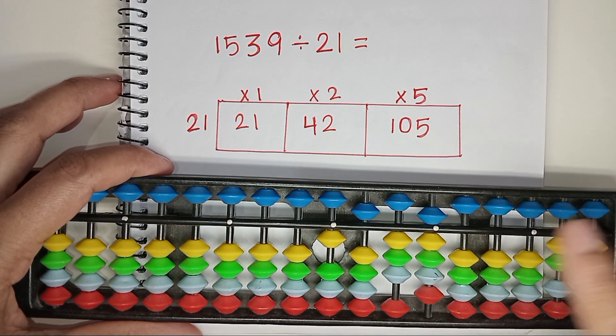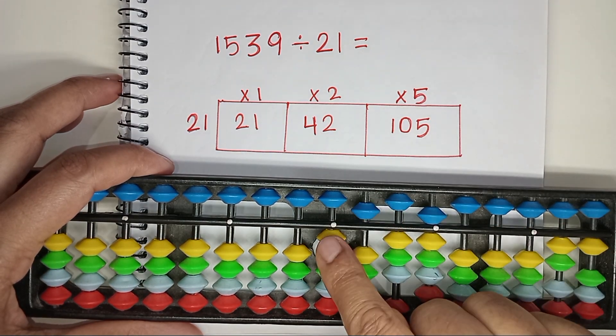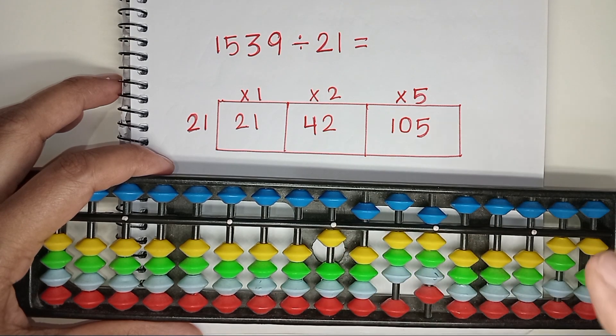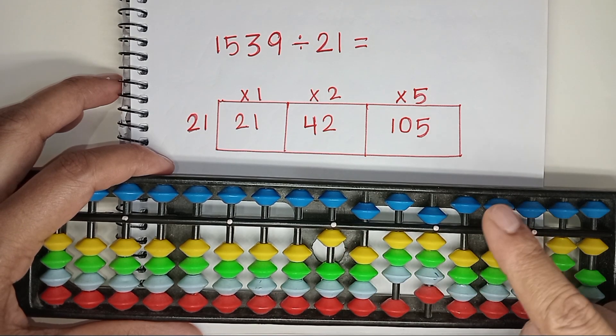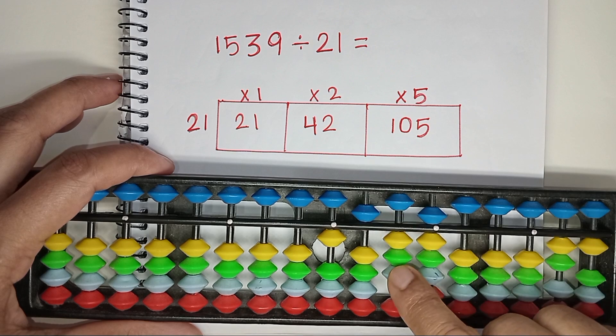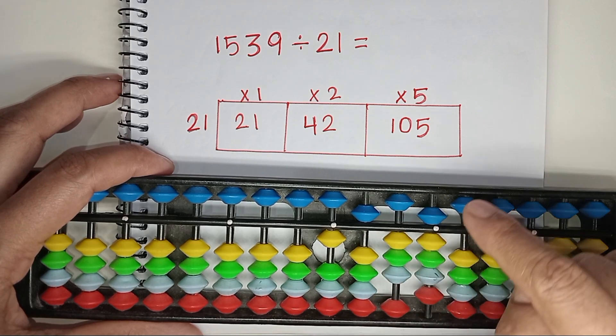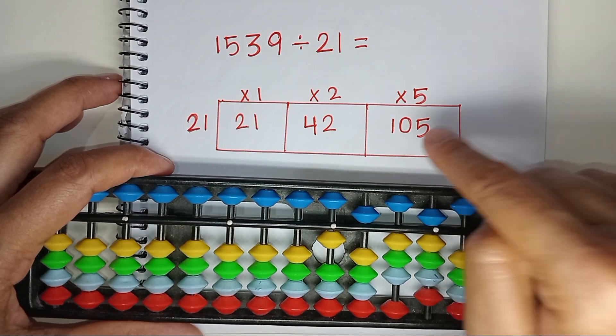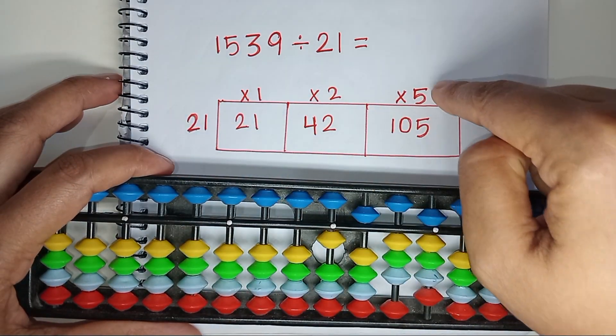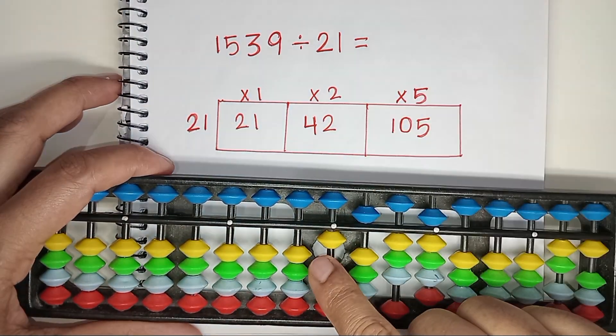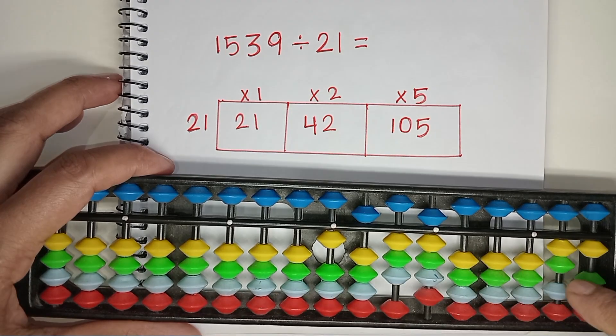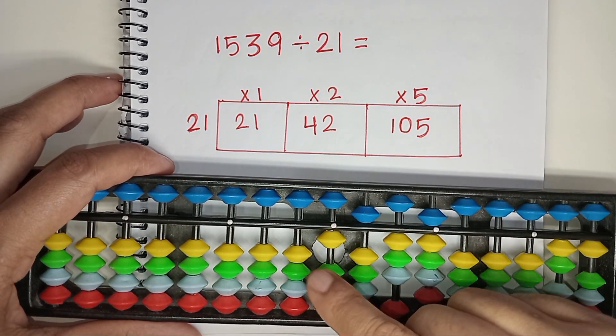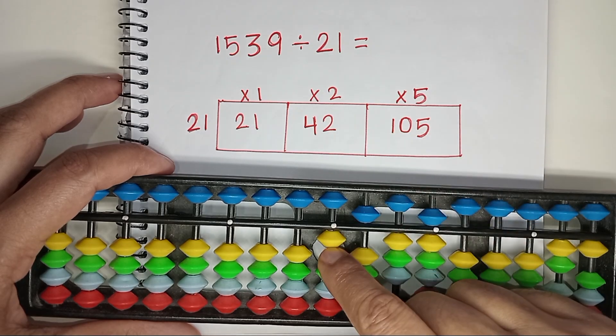Divisor is double digit. So consider 2 rods that represent 1 and 5, which is 15. But 15 is not divisible by 21. That's why we need to consider 3 rods: 1, 5, 3. 153 falls between 105 and something else. So we need to consider the smaller one, 21 times 5 is 105. As we consider 3 rods but our divisor is double digit, we don't need to jump any rod. We will start placing the product just after that rod.